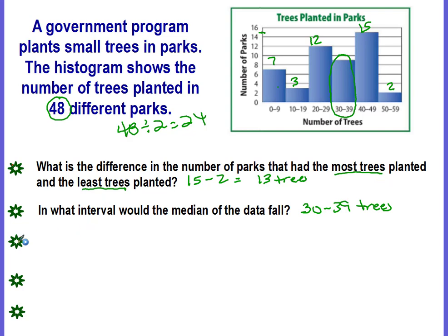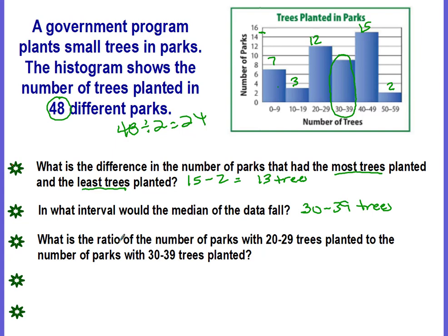Next question. What is the ratio? Ooh, we're going all the way back to first semester. What is the ratio of the number of parks with 20 to 29 trees planted to the number of parks with 30 to 39 trees planted? Okay, so ratio, we write it in the order that they asked. 20 to 29 trees planted to the 30 to 39 trees.